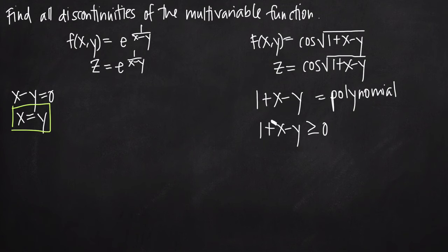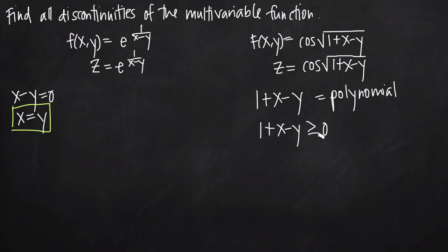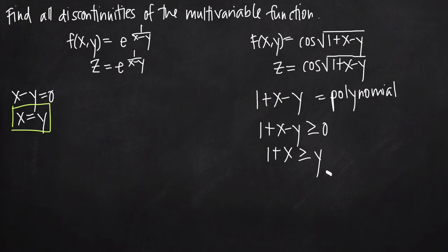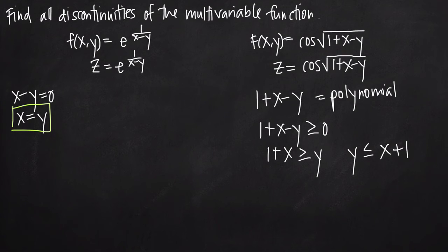It's just that the value underneath the square root sign has to be greater than or equal to zero because we have that square root. We could leave the expression this way, or we could manipulate it — for example, we could add y to both sides and say that 1 plus x has to be greater than or equal to y, or in other words, y has to be less than or equal to x plus 1.